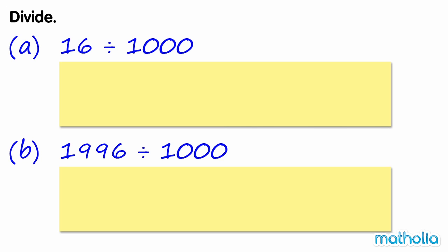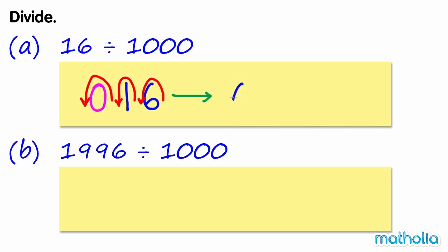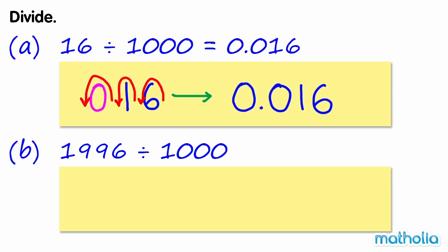Divide. A. 16 divide 1000. We can divide by 1000 by shifting the decimal point three places to the left. 16 becomes 0.016. So 16 divide 1000 equals 0.016.